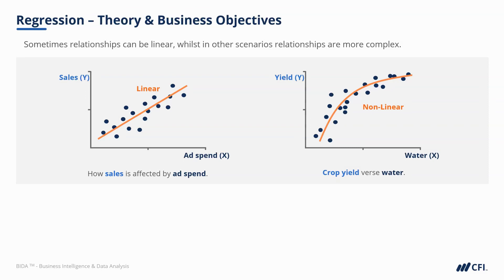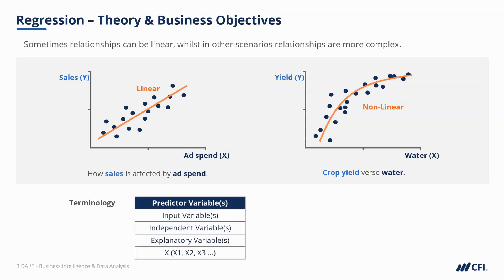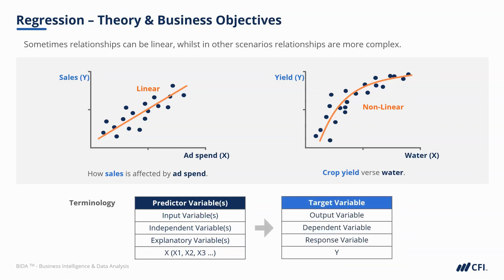Before we go further, let's clarify the terminology used within regression. Model inputs are called predictor variables, and we might call them inputs, independent variables, explanatory variables, or refer to them as x, x1, x2, x3 if there's more than one. On the other side, our target variable can also be known as an output, a dependent variable, a response variable, or simply referred to as y. In summary, the goal of regression is to understand how predictor variables help us predict the target variable.